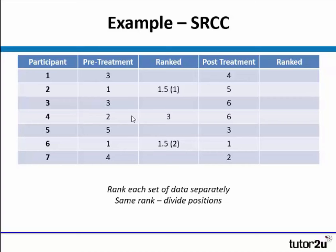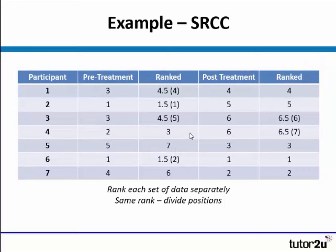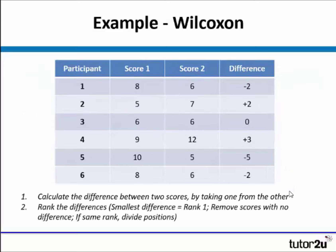The score of two takes rank three because ranks one and two have already been used. The following positions continue to be filled in — we had two scores of three, which would have taken ranks four and five, so they both take 4.5. Then we have one score of four, which takes rank six, and one score of five, which takes rank seven. Similarly, in the post-treatment group, positions six and seven had to be divided because there were two scores of six. That's Spearman's rank.